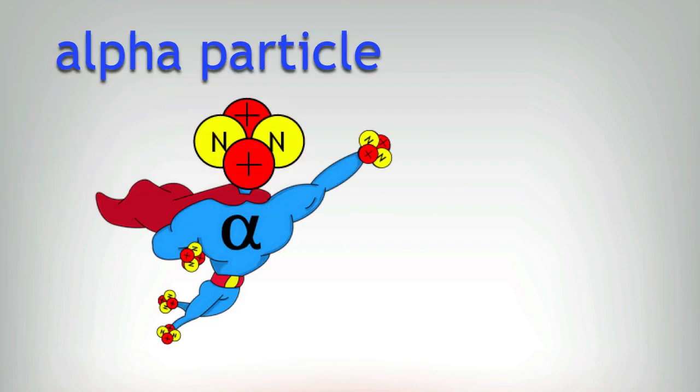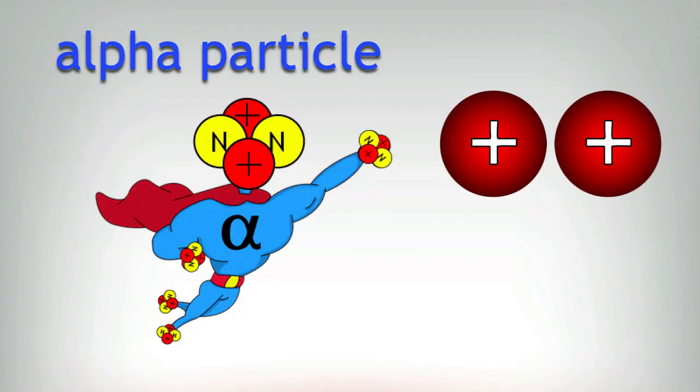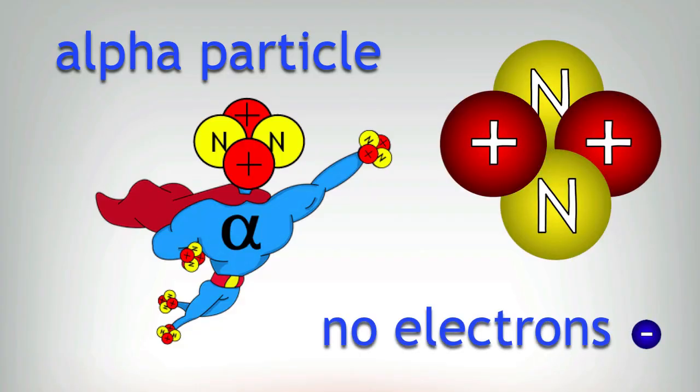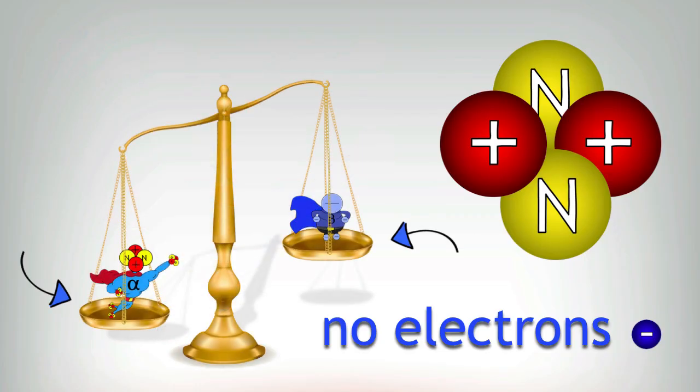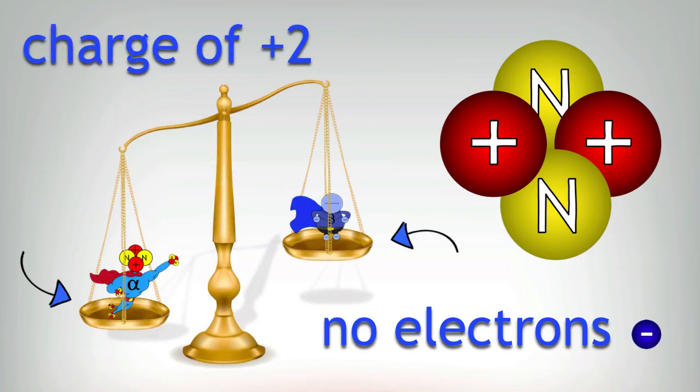So there you have it. An alpha particle is two protons and two neutrons. It's the heaviest type of radiation and the two protons give it a charge of plus two.